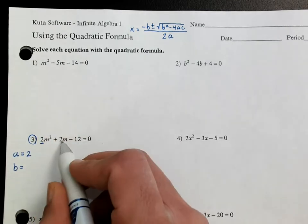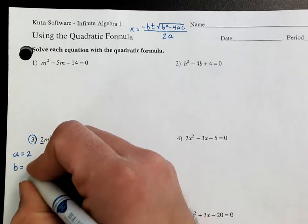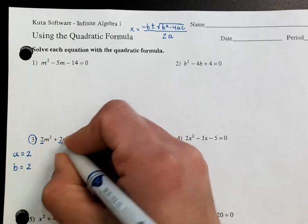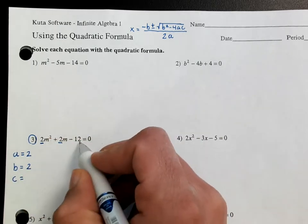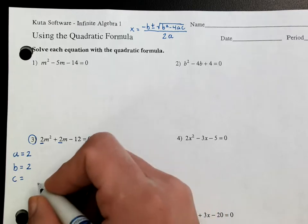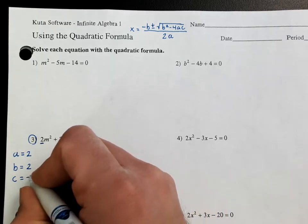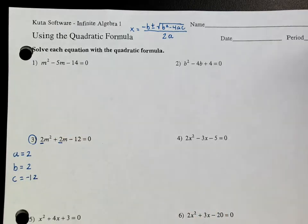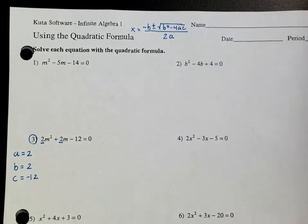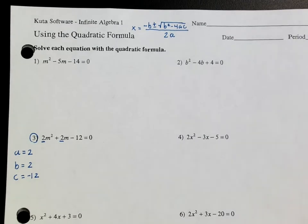B is going to be this number right here, and then c is going to be the constant, which in this case is negative 12. Alright, so those are going to be my numbers. Now all I have to do from here is just plug it in directly into the quadratic formula.